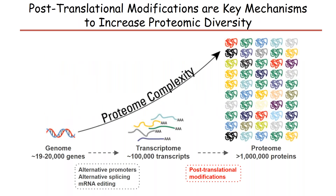This figure highlights the fact that PTMs increase proteomic diversity. There are around 19,000 to 20,000 protein-coding genes in humans, and from each gene, multiple transcript isoforms can be generated by RNA processing, such as alternative splicing or mRNA editing. Proteins can be regulated by PTMs, and the proteome is estimated to encompass over 1 million proteins. Thus, different post-translation modifications exponentially increase the complexity of the proteome relative to both the transcriptome and genome.